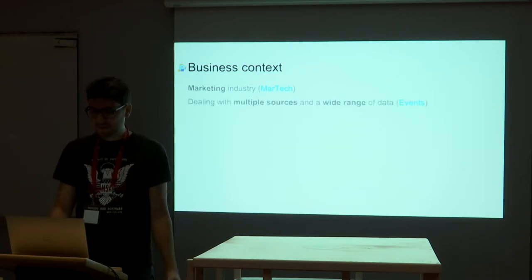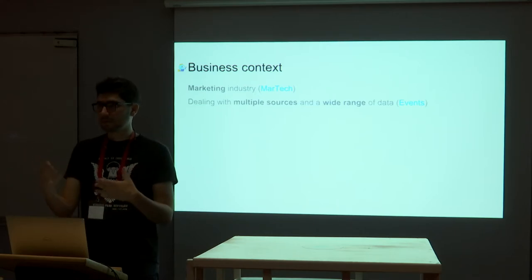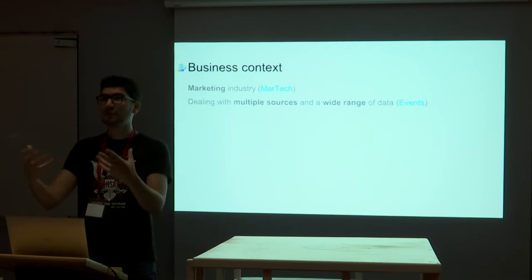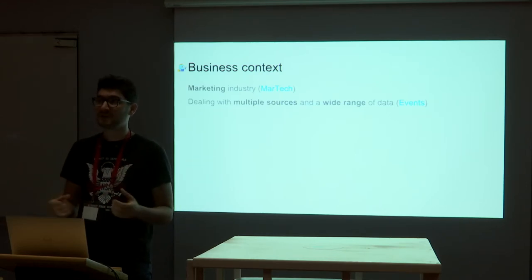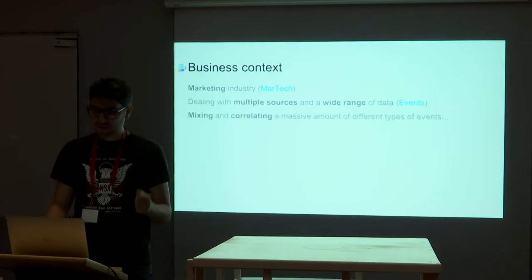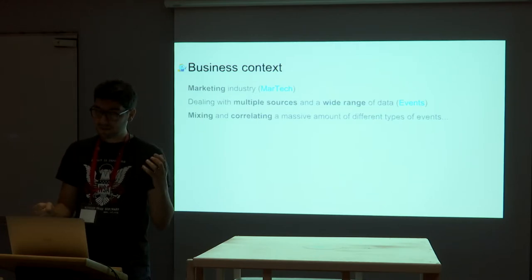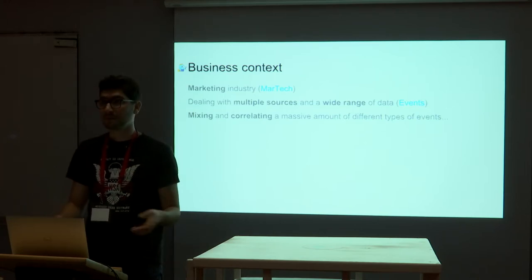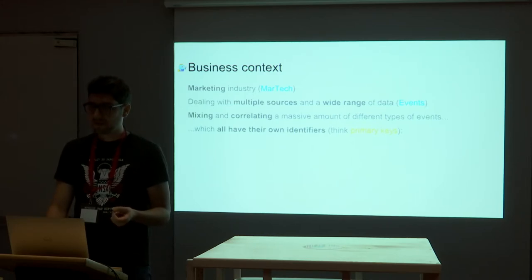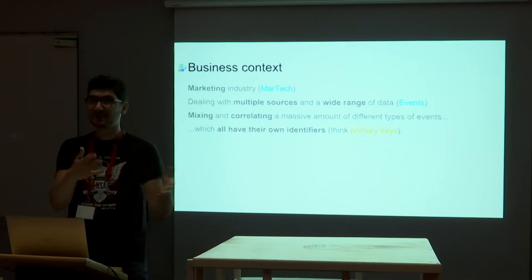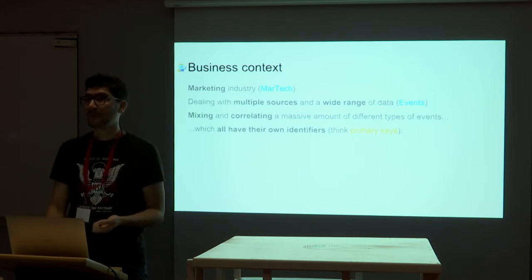We deal with multiple sources of data and a wide range of events. We see data as events — any kind of data that comes in or is updated is a new event, a new knowledge of the data, so you can see it as continuously evolving. When you have multiple sources, you need to be able to mix them and correlate them at a massive amount. Different types of events — one can be a purchase while another can be web navigation — and all of them have their own identifier. You can think of it as primary keys.